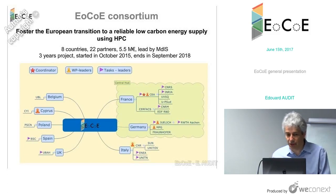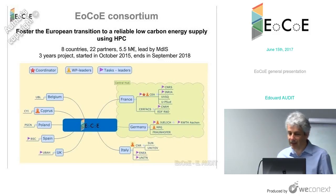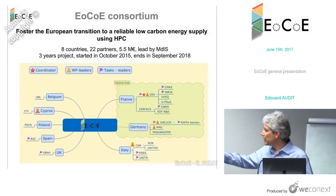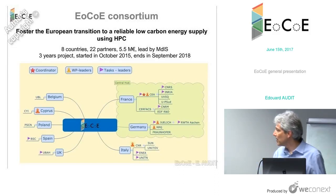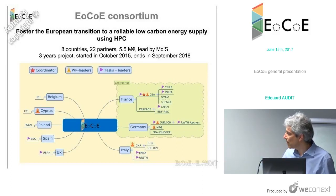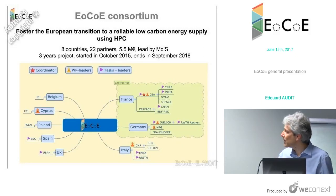A quick presentation of the consortium: ECO gathers eight countries, 22 partners, with a budget of a bit more than five million euros. It's a three-year project that started in October 2015 and will end in September 2018. There is a large Franco-German hub with strong HPC application expertise, and a wider network with strong partners in Italy, the UK, Spain, Poland, Cyprus, and Belgium — gathering high-end expertise across different domains necessary for our goals.